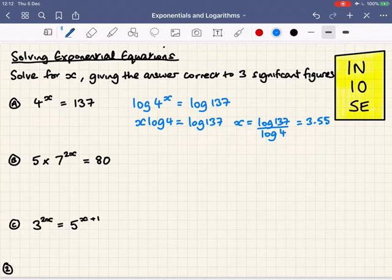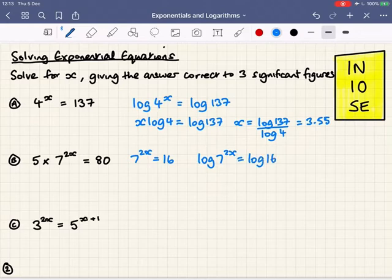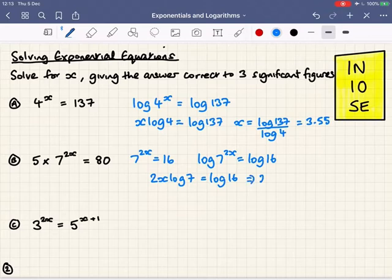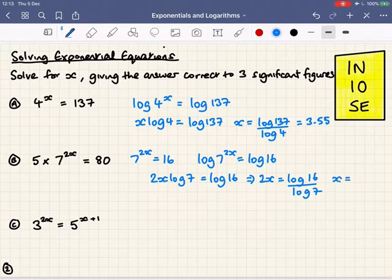In the second question, we've got 5 times 7 to the power of 2x equals 80. I could take the log of the whole thing on the left, but it's probably easier just to divide by 5 straight away. So 7 to the power of 2x equals 16. Log of 7 to the 2x equals log 16. Bring 2x to the front: 2x log 7 equals log 16. So 2x equals log 16 over log 7, and x equals 0.712. Nice and straightforward, immensely powerful.